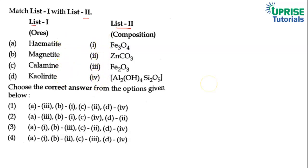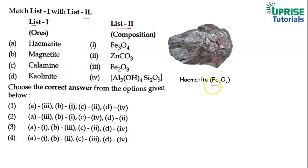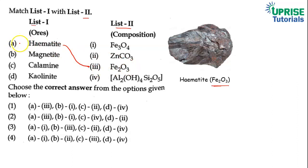Pehle hum log padhenge hematite ke baare mein. Hematite jo hota hai, vah iron ka most important ore maana jata hai. Aur iska formula Fe2O3 hota hai. Means A jo hematite hoga, vah third se match karega.